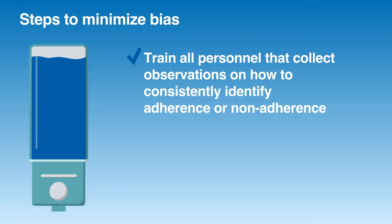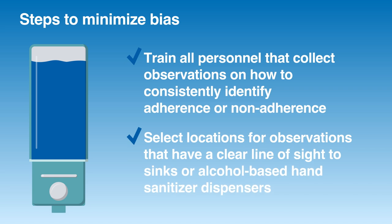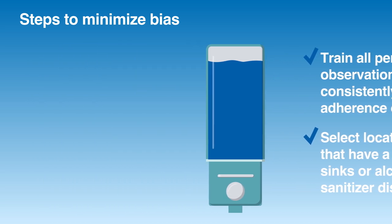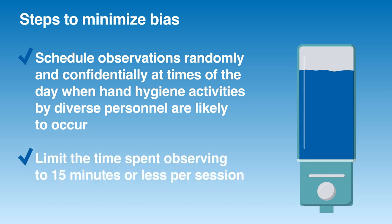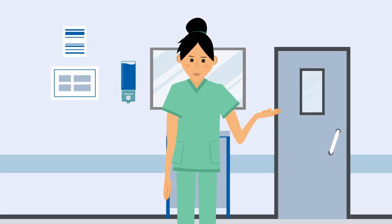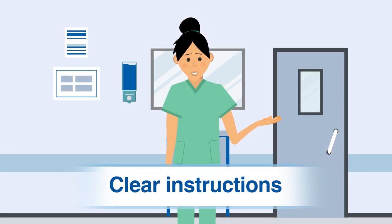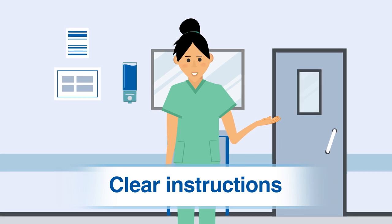Train all personnel that collect observations on how to consistently identify adherence or non-adherence. Select locations for observations that have a clear line of sight to sinks or alcohol-based hand sanitizer dispensers. Schedule observations randomly and confidentially at times of the day when activities by diverse personnel are likely to occur, such as during patient rounds or a change of shift. Limit the time spent observing to 15 minutes or less per session. To promote a facility culture of speaking up, anonymous observers should have clear instructions about how non-adherence should be addressed.